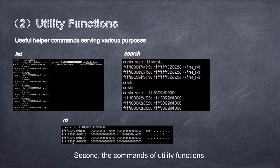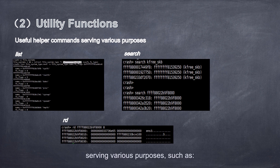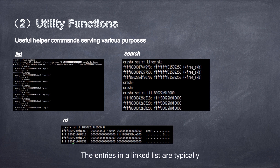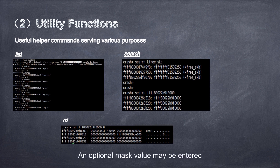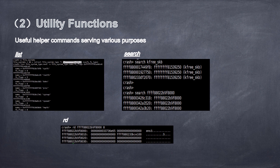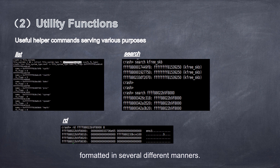Second, the commands of utility functions. This set of commands are useful helper commands serving various purposes, such as list, which dumps the contents of a linked list — the entries in a linked list are typically data structures that are tied together. Search, which searches a range of user or kernel memory space for a given value, with an optional mask value to mask off don't-care bits. And rd, which reads memory with the output formatted in several different ways.